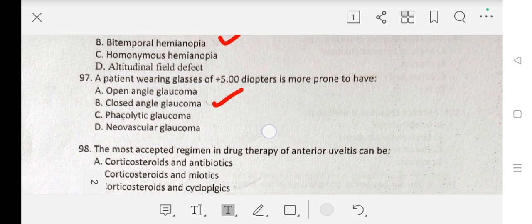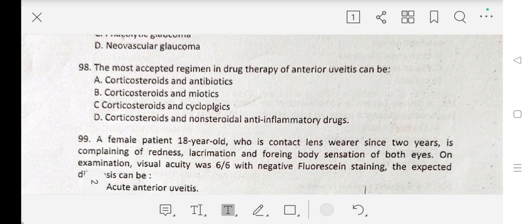Question number 98 is: The most accepted regimen in drug therapy of anterior uveitis can be A. corticosteroid and antibiotics, B. corticosteroid and miotics, C. corticosteroid and cycloplegics, D. corticosteroid and non-steroidal anti-inflammatory drugs. Our correct answer is C. corticosteroid and cycloplegics.